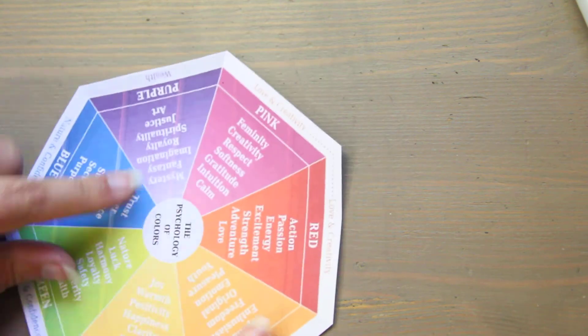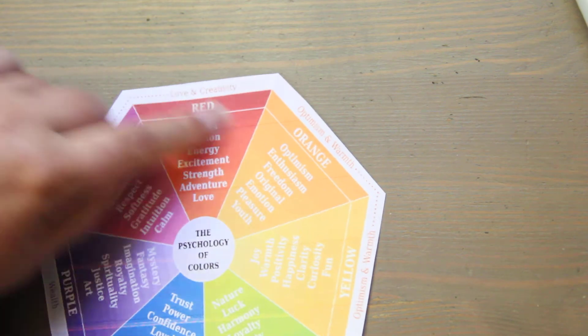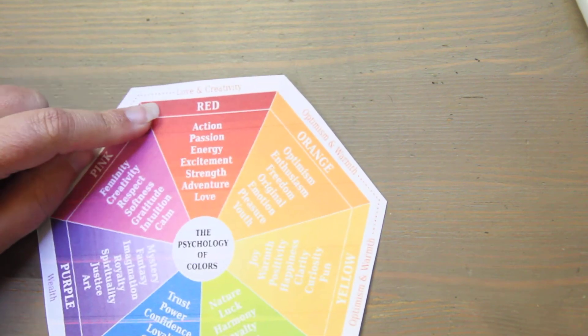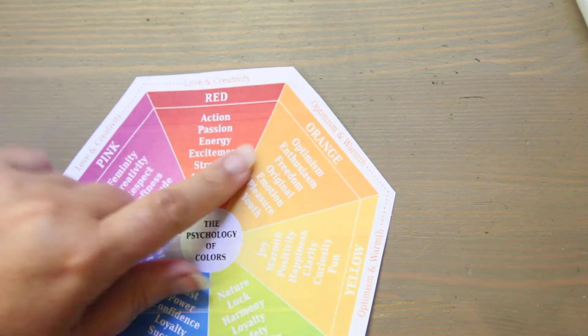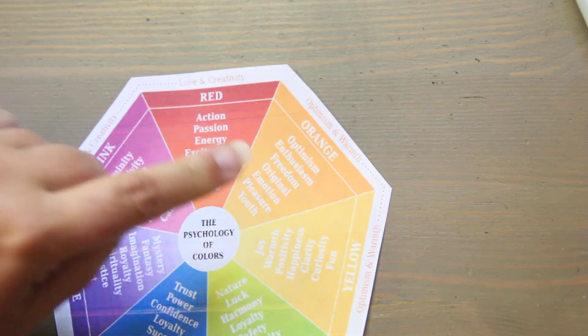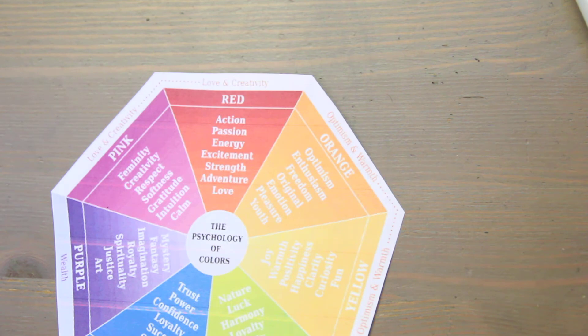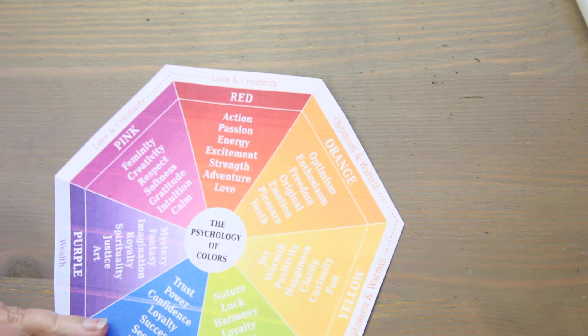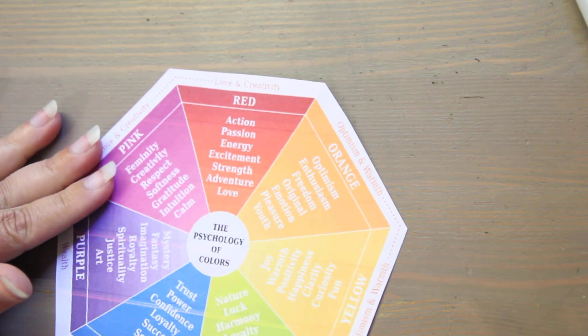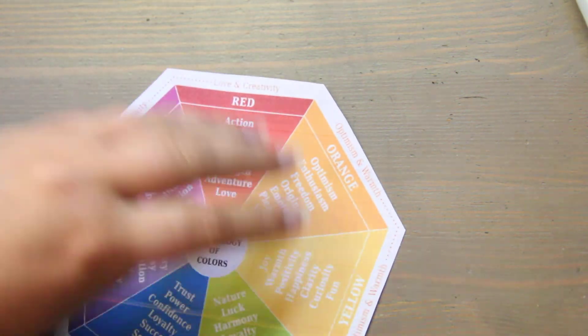Action passion energy excitement strength adventure red these sort of warm excitable colors when you look at fast food chains they are all warm colors action optimism joy warmth. These are all excitable warm colors that make you eat more so a lot of fast food chains employ that they don't want you feeling relaxed they want it fast they want you excited they want you in and out.